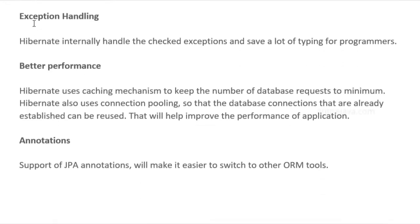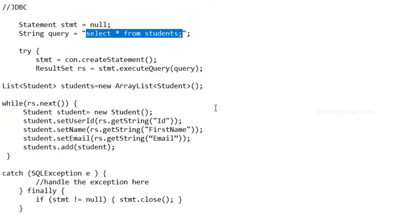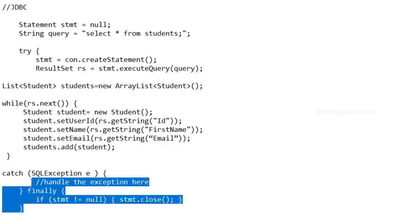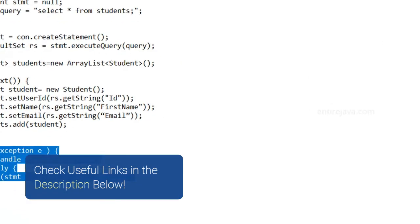One of the major advantages of using the Hibernate framework is its ability to handle exceptions. With the JDBC approach we have to wrap code in a try-catch block and catch the exceptions, because these are checked exceptions that developers must deal with themselves.